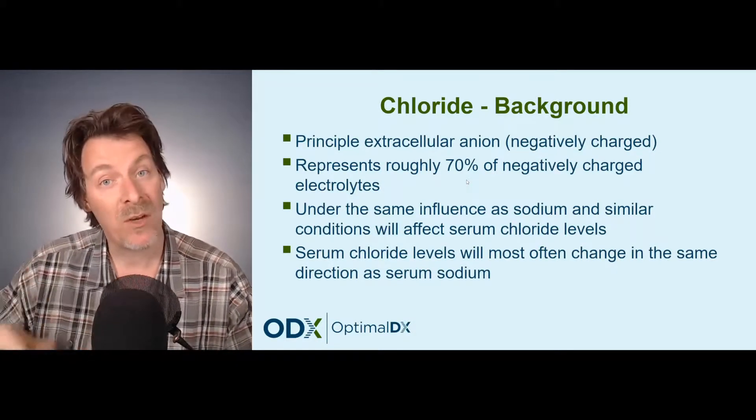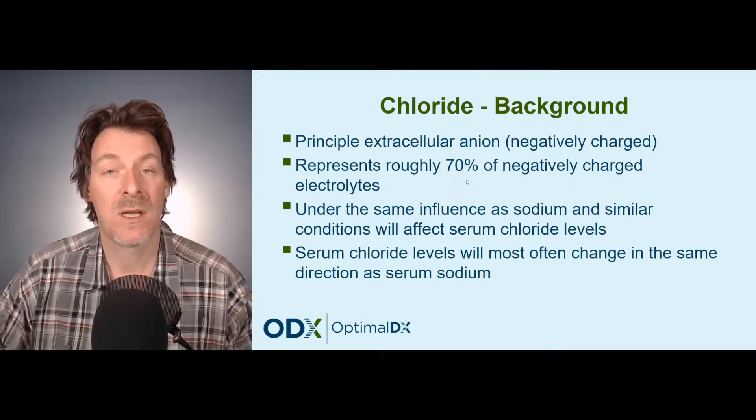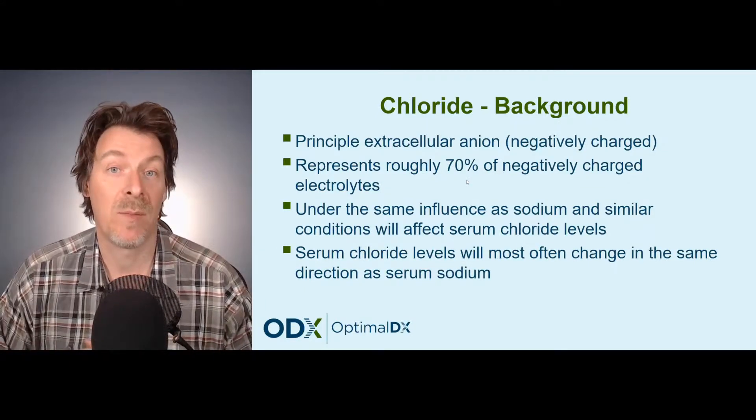The same thing would be happening with decreased aldosterone levels — decreased serum sodium, decreased serum chloride. So where does chloride come from? Most of the chloride we get is in the form of table salt or sodium chloride. We consume roughly 6 to 12 grams of chloride in a day, and the regulation of chloride in the body is under the influence of the kidneys.